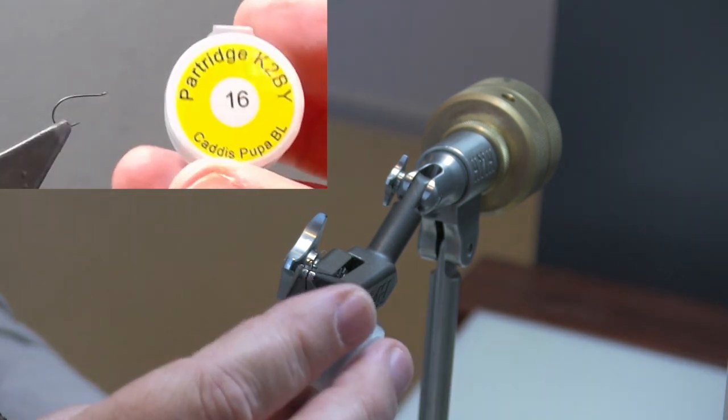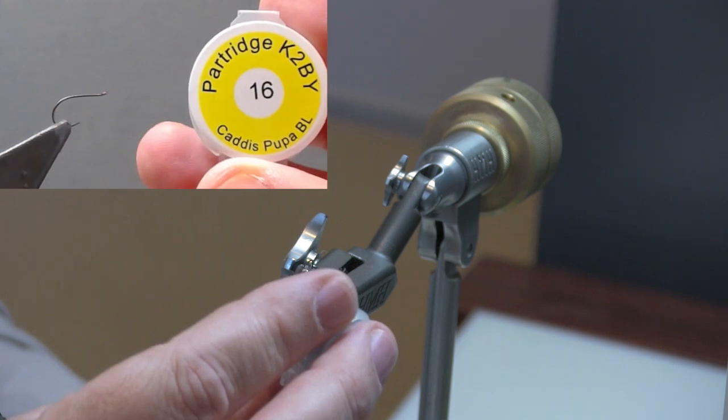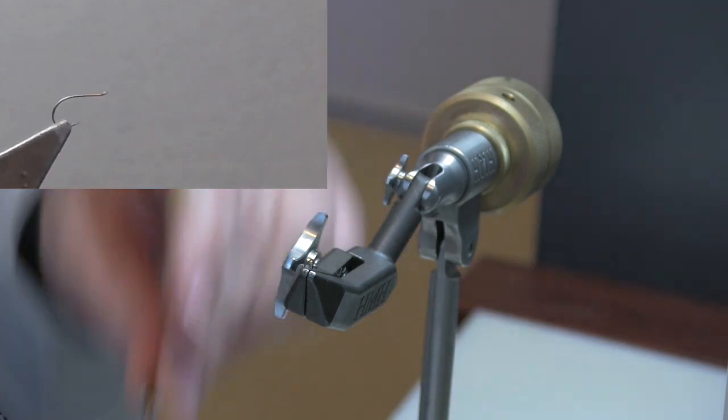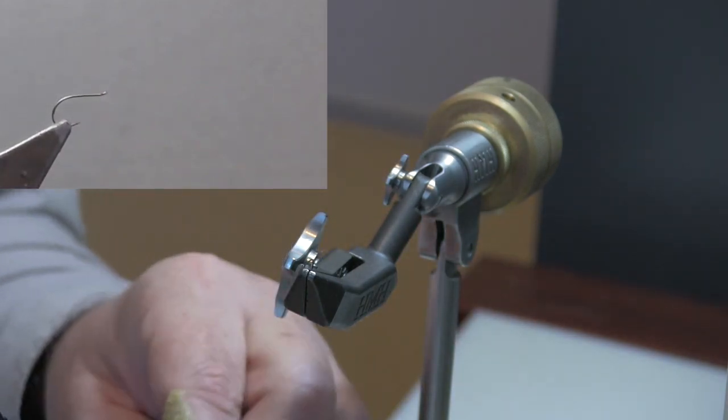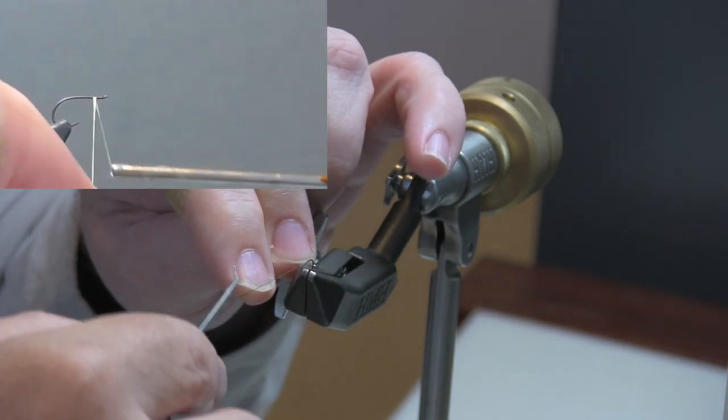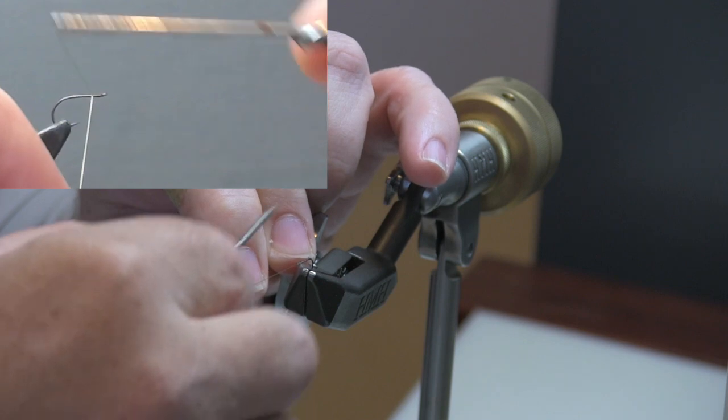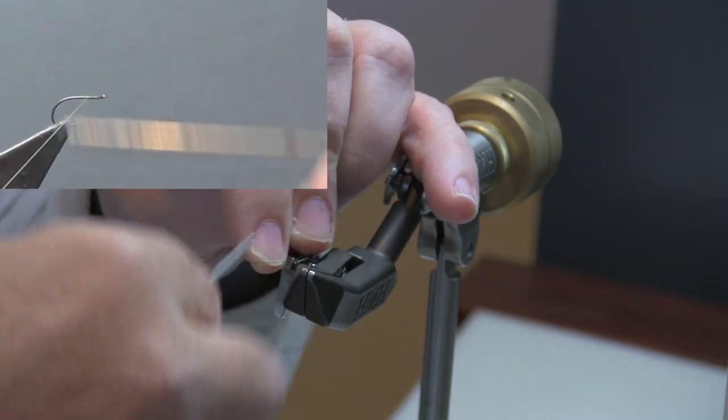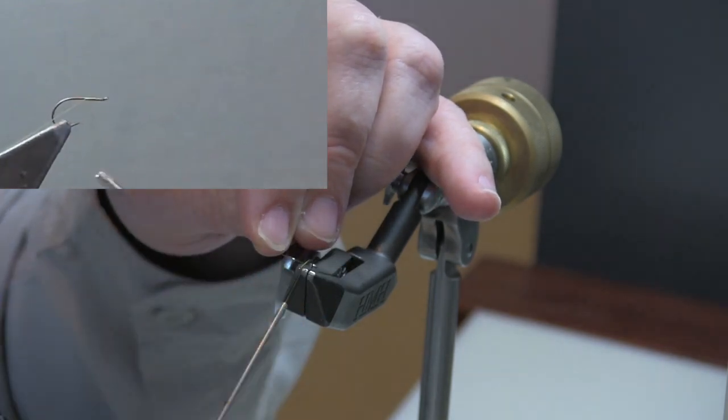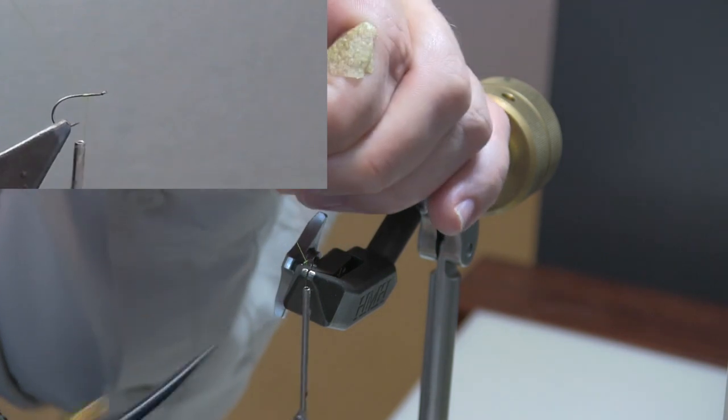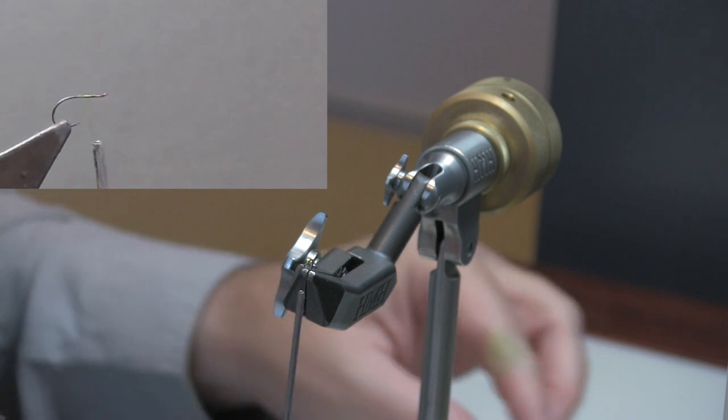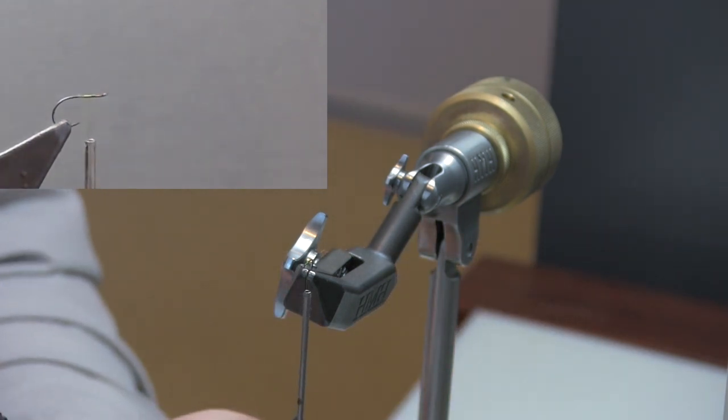The hook that I have in the vise is a Partridge Caddis Pupa barbless hook, the K2BY in a size 16. I know some people like to tie their soft tackles on a standard dry fly hook. I like this because I like to have just a little bit of curve to the shape. So I'm going to go ahead and tie in my thread about a millimeter or two behind the hook eye. Come back a little bit and then come back forward because I want to be able to tie my feather in on the thread rather than on the bare shank where it might slip.